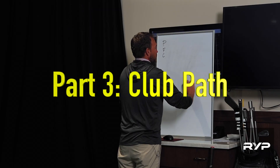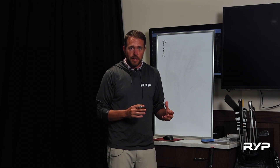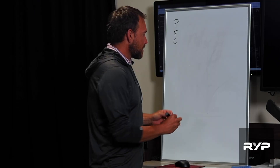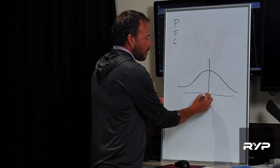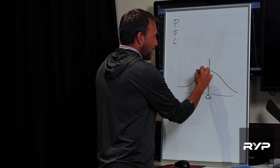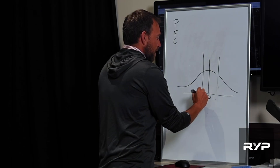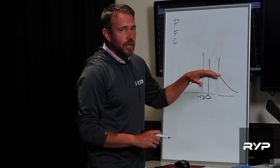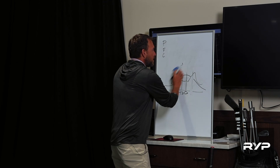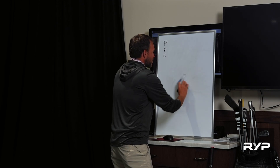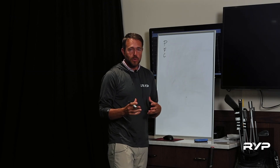Now let's go into club path. There's a little debate — some people believe you should have one shape, hitting draws or fades. But looking at tour stats, the average dispersion on the PGA Tour with an iron is right around zero. With a driver it's a little different — players tend to fade it slightly more — but it's not bimodal. You're not seeing some people hit draws and others hit fades. They generally hit their irons pretty straight. Our goal for path is that your club path is within two or three degrees of zero.